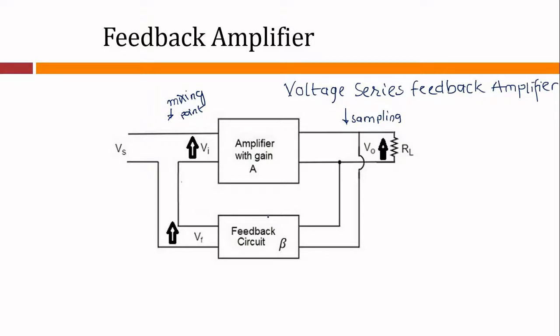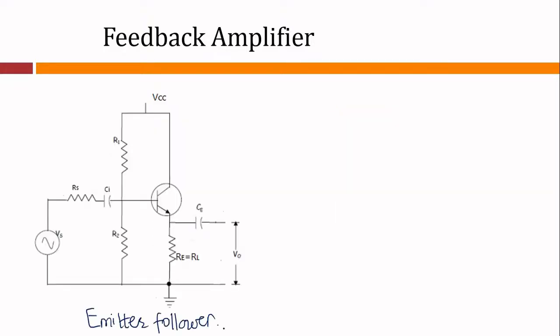Negative feedback improves linearity of operation, although it offers certain disadvantages — it decreases the voltage gain. In the case of voltage series feedback, the input impedance of the amplifier is increased and the output impedance is decreased. Also, noise and distortions are reduced considerably.